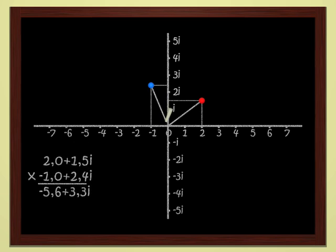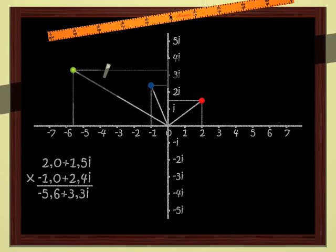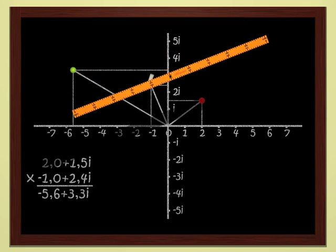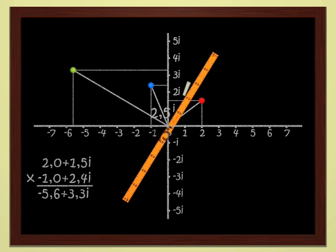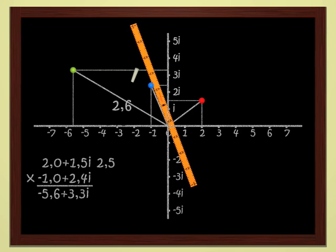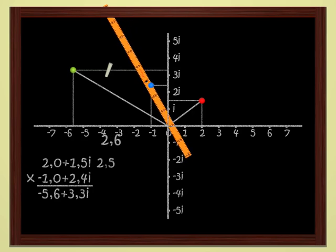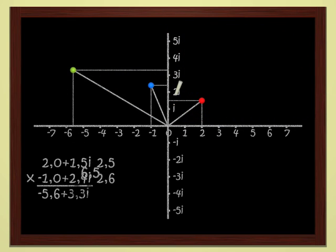Now's a good time to define two notions, the modulus and the argument of a complex number. The modulus of a complex number, z, is just the distance from the origin to the point that represents z in the plane. Let's use the ruler to determine the modulus of the red point, which is 2 plus 1.5i. Let's see...it measures 2.5. The modulus of 2 plus 1.5i is therefore 2.5. For the blue point, I get 2.6. And for the green point, which is the product of the two points, I get 6.5. What's the rule? The modulus of a product of two complex numbers is just the product of the moduli of the two numbers.